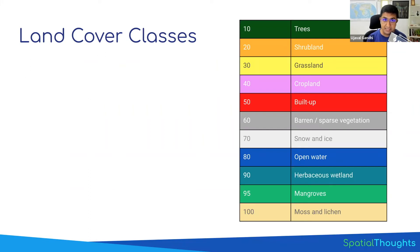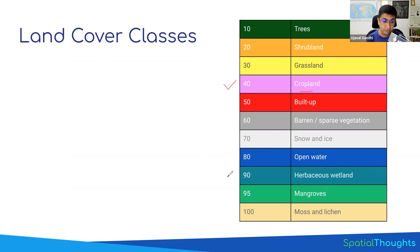Each pixel in this dataset is classified into one of 11 classes. Each pixel value denotes a specific land cover class. For example, if we inspected a pixel and the value was 40, that means that particular pixel was cropland. Similarly, if the value was 90, that means it's a wetland. So each pixel is one of these 11 classes that is available globally.